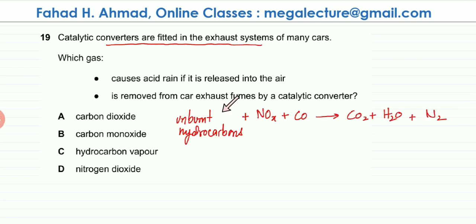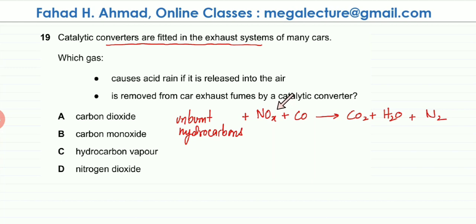Your car produces harmful gases. These are unburned hydrocarbons (CₓHᵧ). Nitrogen oxides are produced when the air heats up and nitrogen and oxygen in the air react with each other. Carbon monoxide is produced due to incomplete combustion and is a poisonous gas.